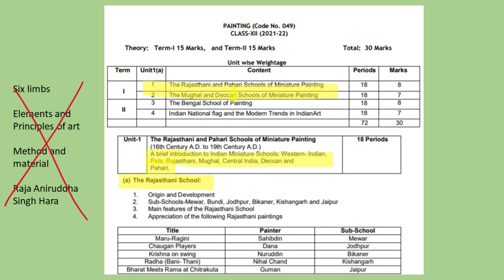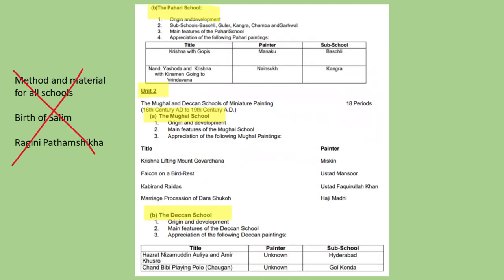Though elements, principles and six limbs are no longer part of the theory syllabus, they are still very important — first, because they are the foundation of art, and second, they are very important for viva. The external examiner will definitely ask questions from elements and principles, especially color theory. So please go through them from your books. I have also made videos on them and color theory has been done in detail. Further on, method and material for all schools have been deleted.